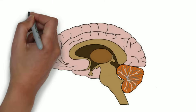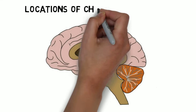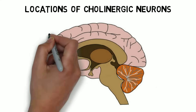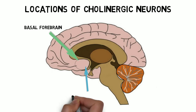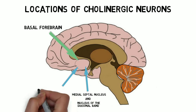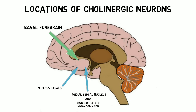Neurons that contain acetylcholine are called cholinergic. There are several clusters of cholinergic neurons throughout the brain. Some are found in the basal forebrain, including the medial septal nucleus, the nucleus of the diagonal band, and the nucleus basalis.